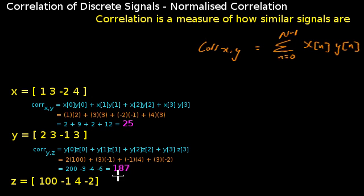For example, when we compared signals X and Y using this technique, we got a numerical value of 25. Whereas when we compared Z and Y, we get this larger value of 187, which isn't what you'd expect. In general, you'd expect that a larger value indicates more similarity.